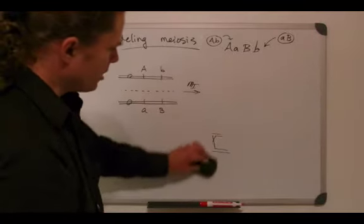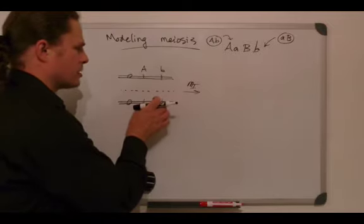So crossing over can happen anywhere along this length. Now the issue is that the probability of a crossover happening is proportional to the number of nucleotides or the physical distance between two loci. The closer two loci are together, the less likely it is that a crossover will happen between them. And the farther apart two loci are, the more likely it is that there will be a physical crossover between them.